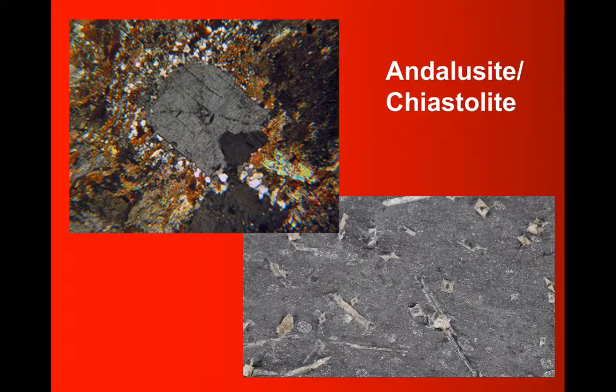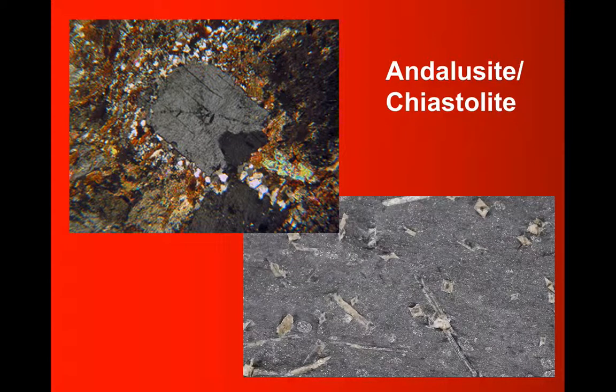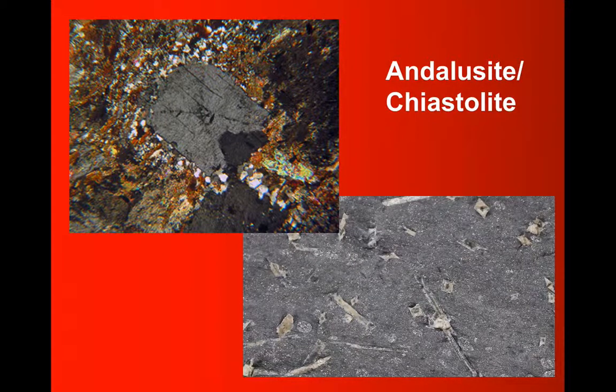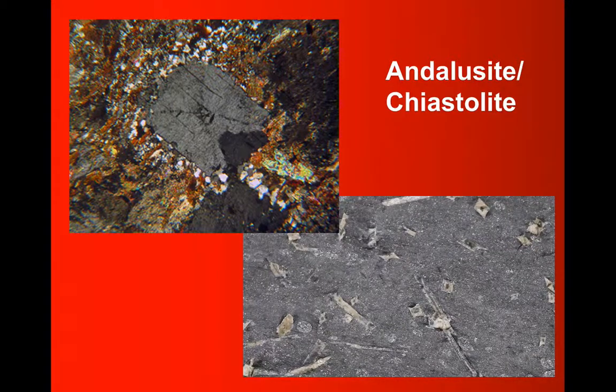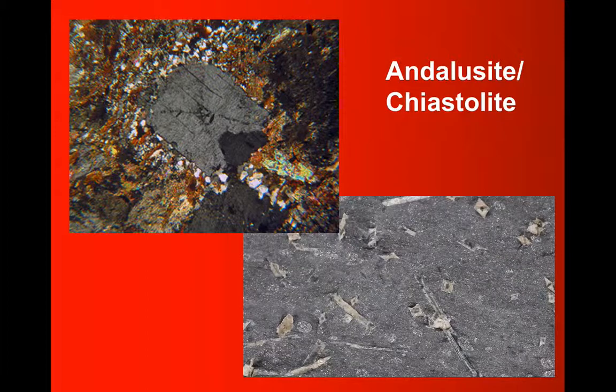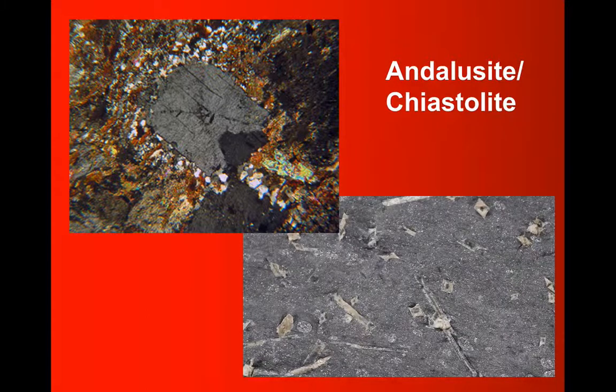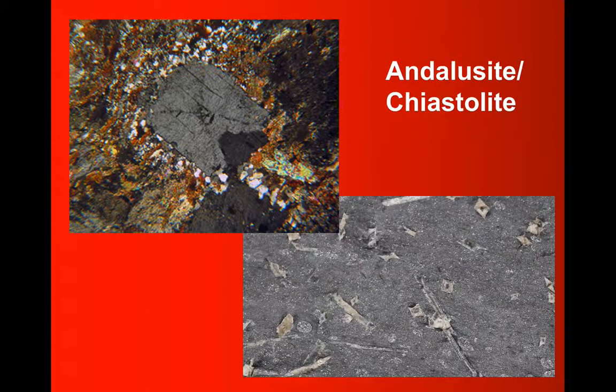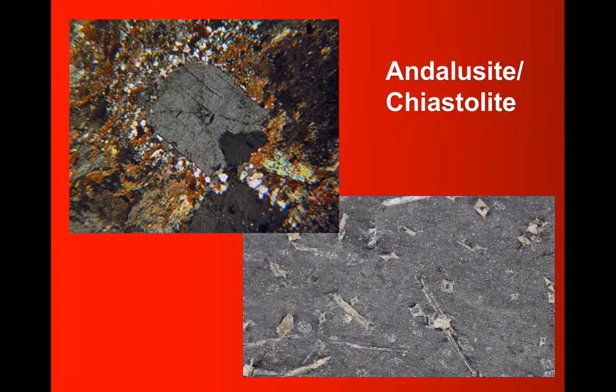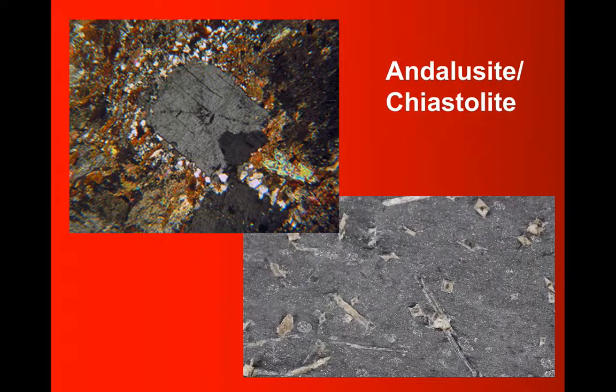And also the very distinctive square cross section, which you can also see in the thin section on the top left. That square cross section often has either a black square in the middle of it, which again you can see in both views, or even, which you can see on the thin section, this sort of cross-shaped pattern running across from the corner to corner of the square.